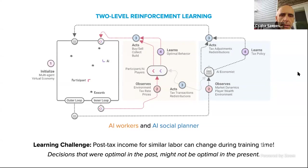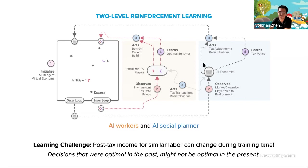One final question: is the outer loop working on a slower timescale or the same timescale as the agents? It's a slower timescale because there's a tax year. The episode is 1,000 time steps. There are 10 years of 100 steps each — the planner acts once every year and the agents act 100 times every year. So the timescales are different.